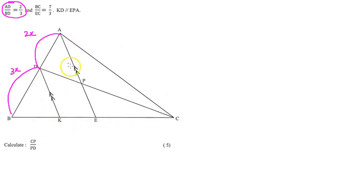Remember that KD is parallel to EPA. Let's look at BC over EC, it's 7 over 3. So we draw a line from B to C and from E to C, and we call BC 7y and EC we call it 3y.